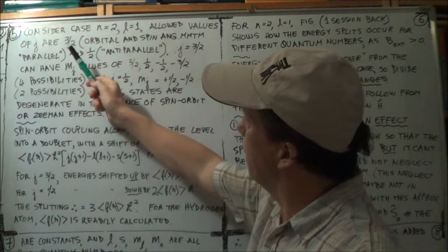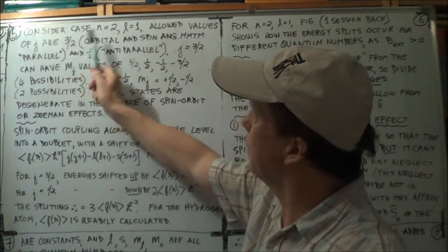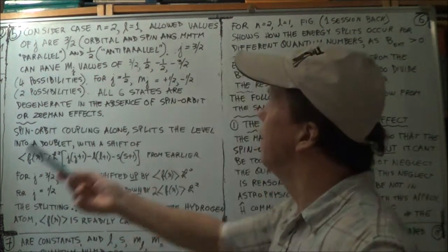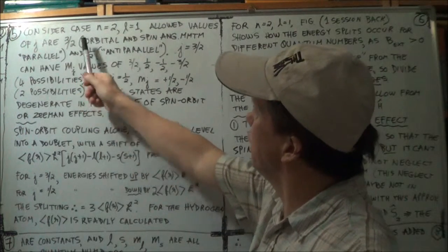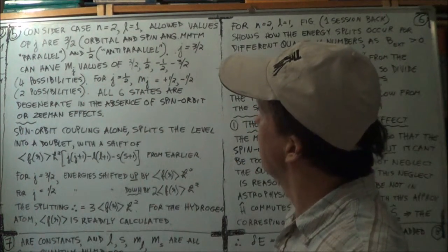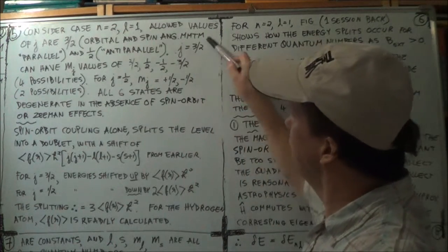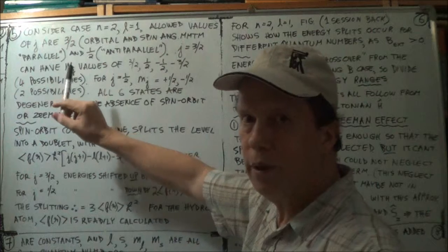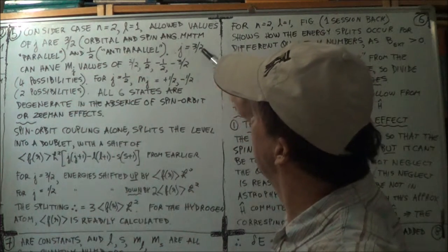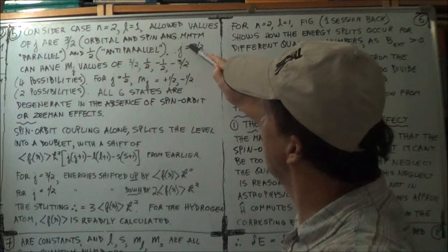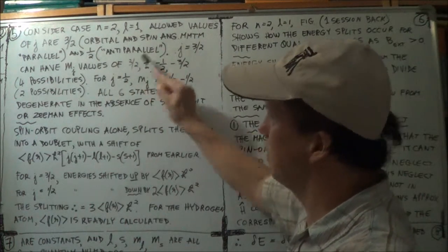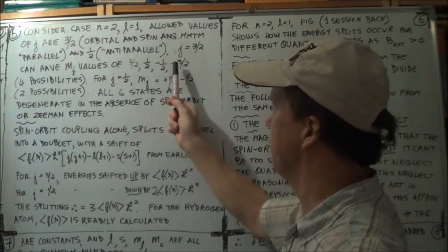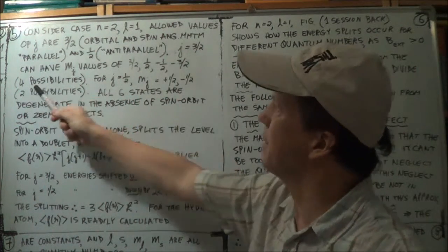So in the parallel case, J is 3 over 2. In the anti-parallel case, sort of like the down state like this, J is a half, the anti-parallel. So when J is 1 and a half, 3 over 2, the allowed values of M of J, the component along the Z axis of J, would be ranging between plus or minus 3 over 2. So you did this in the previous session, just going through this quickly. So 3 over 2, a half, minus a half, minus 3 over 2. There are your four possibilities.